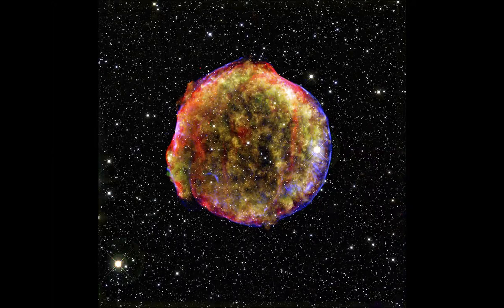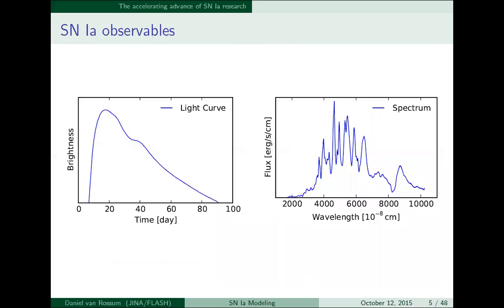Typically, what we observe from supernovae is what we call light curves and spectra. A light curve is just brightness and how it evolves over time. The spectrum is flux as a function of wavelength. This light curve is measured in time and days after the explosion, and you see that it's really dim in early phases and gets brighter later.